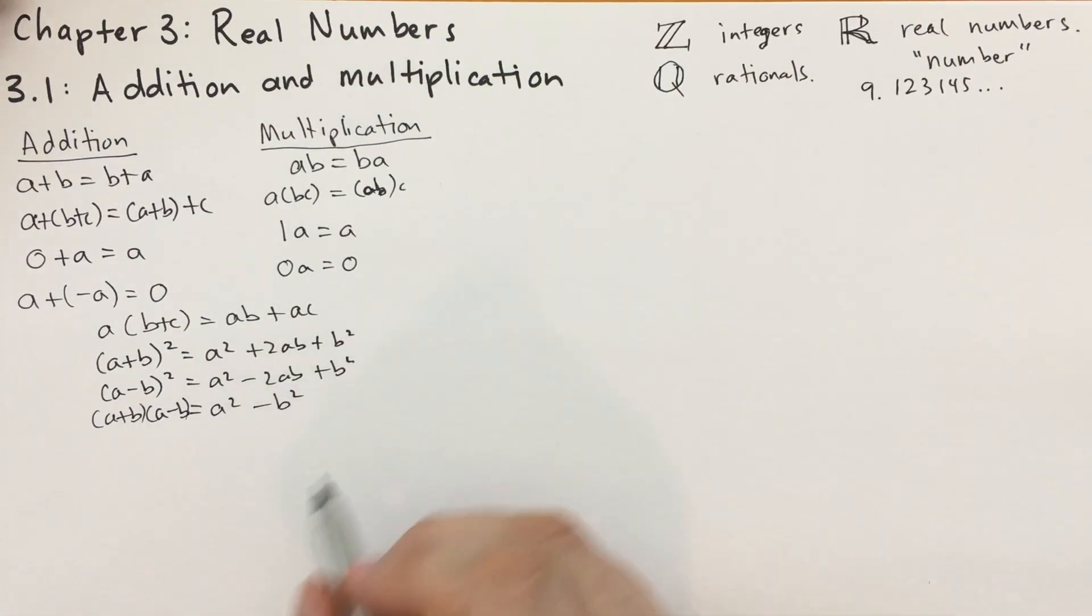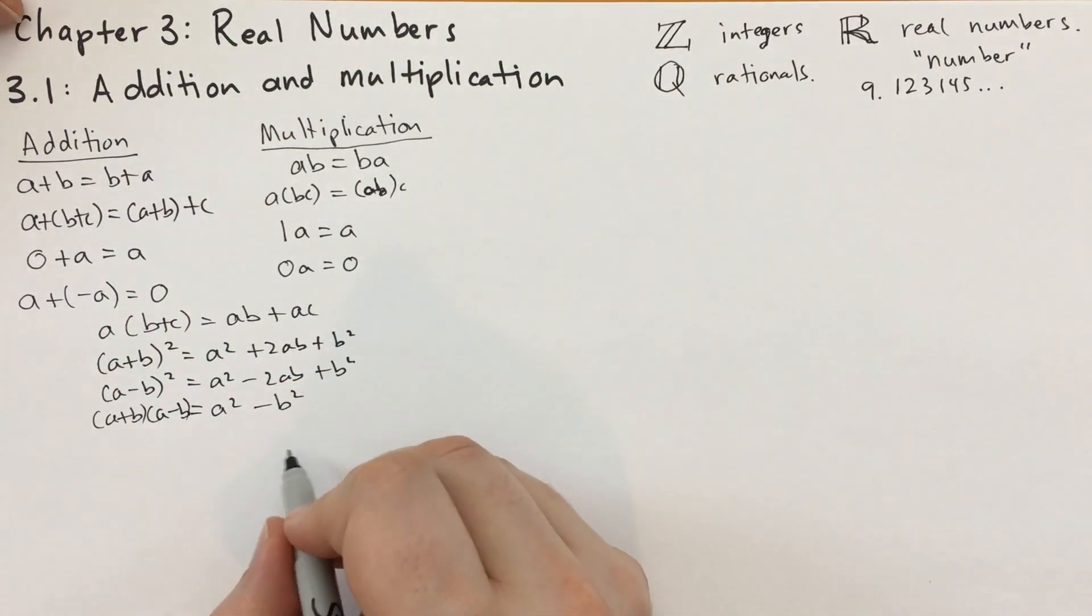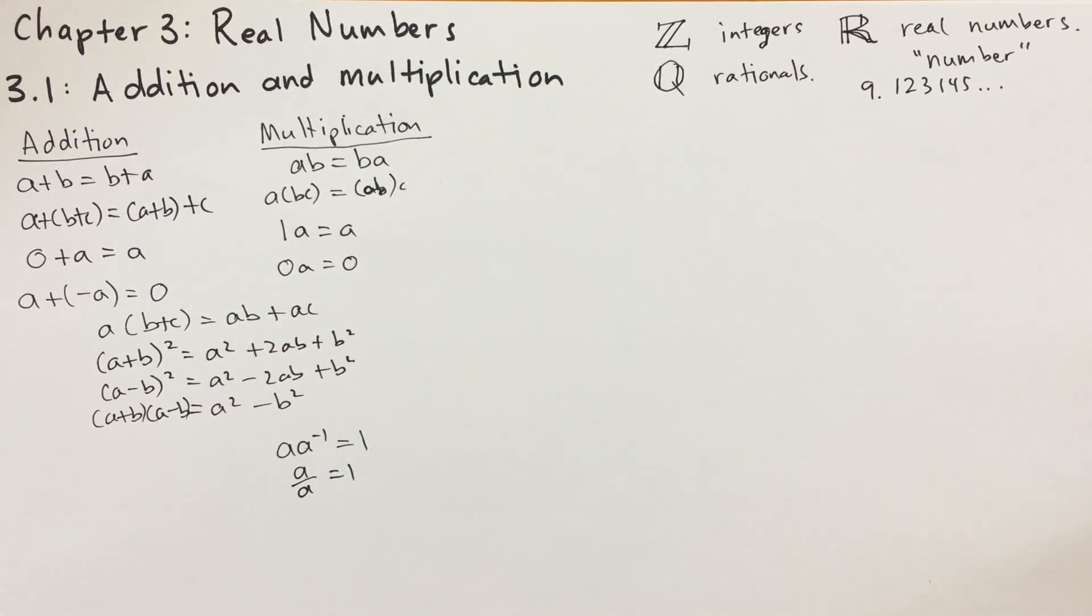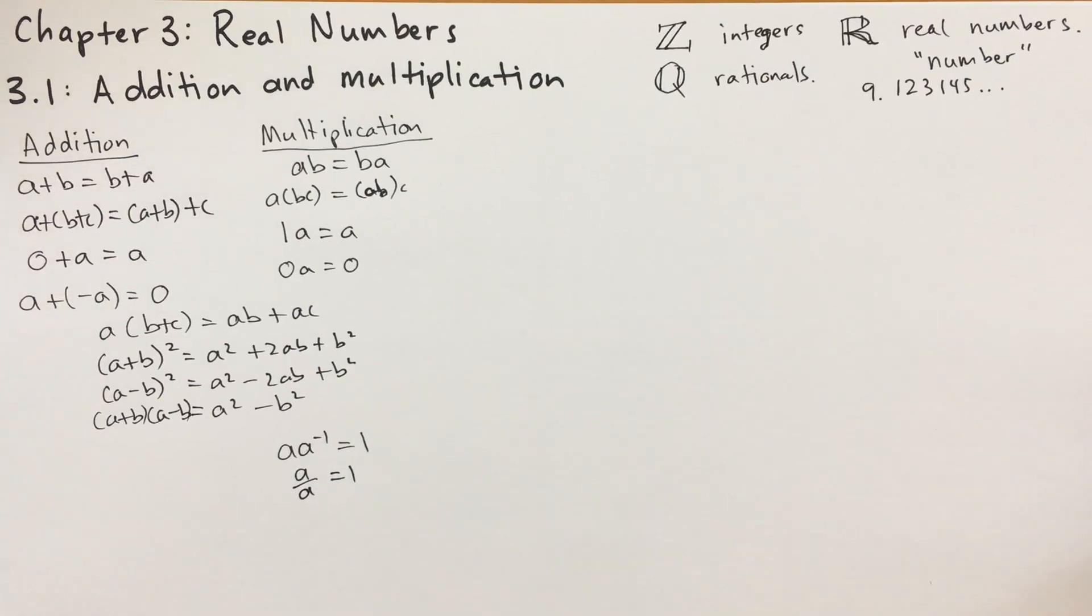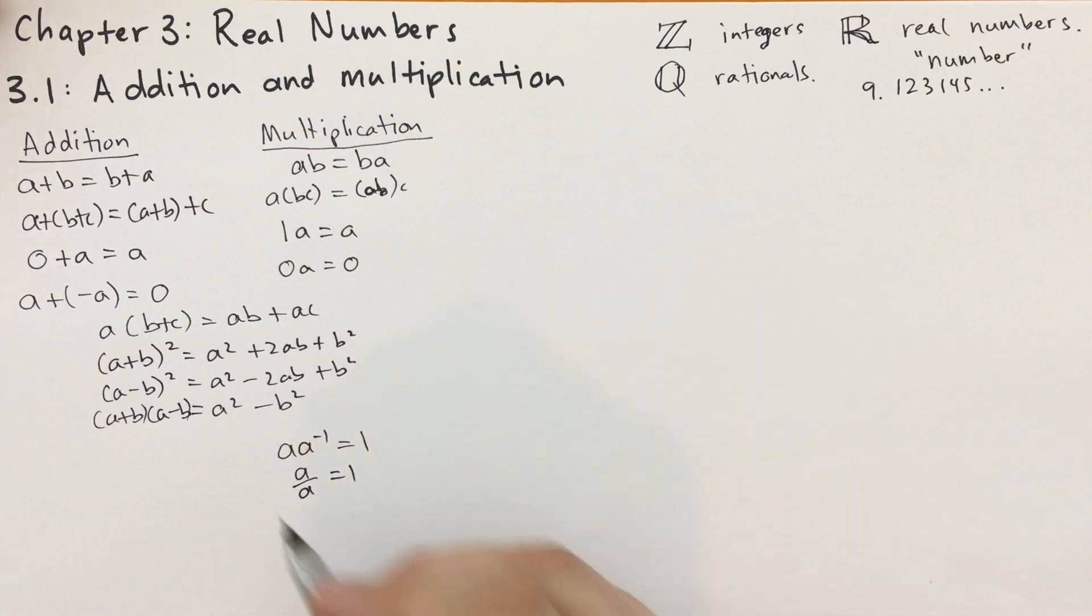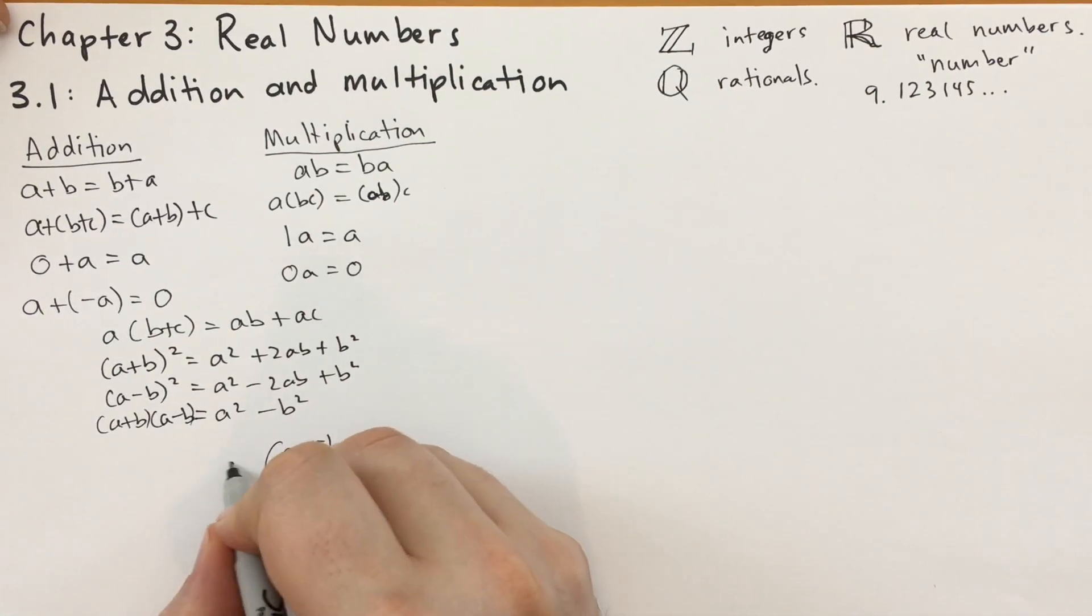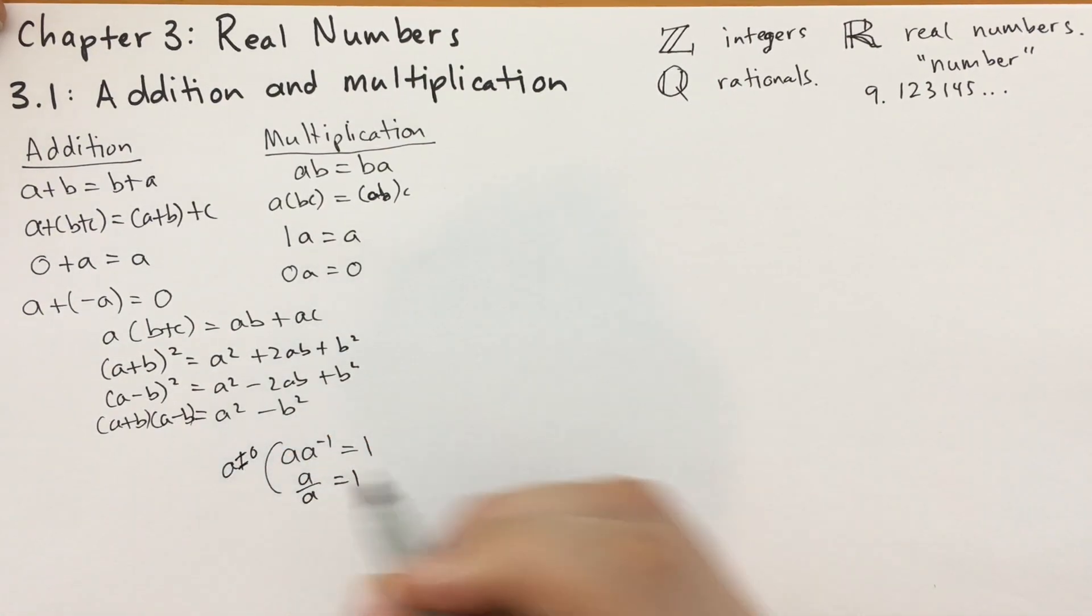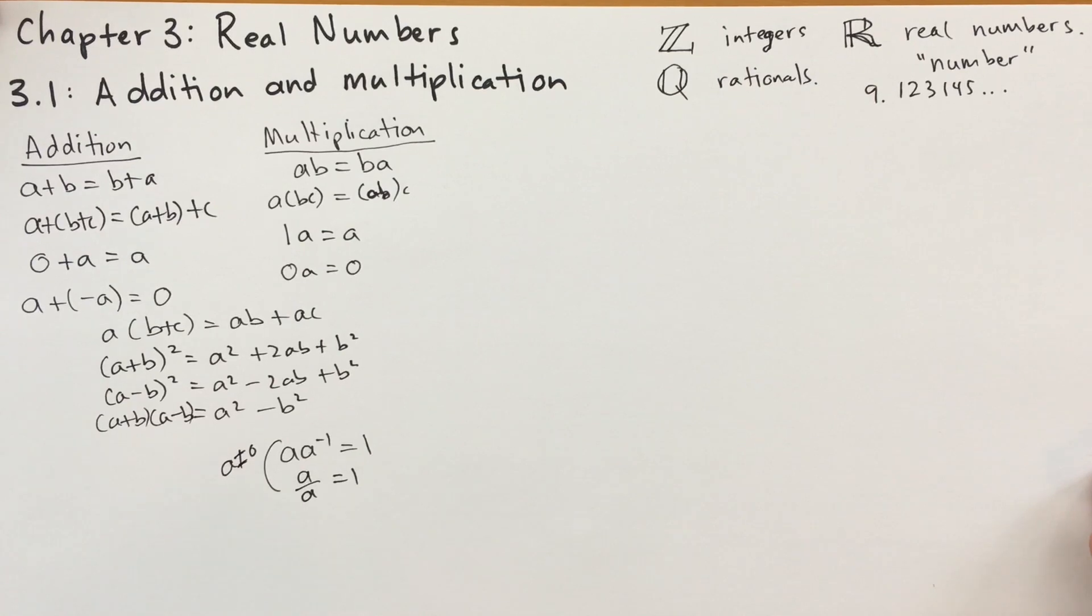We have multiplicative inverses, just like we had additive inverses, except we write them as a to the minus one. That's going to give you one. You can also write it as a over a. So the minus one means you move it downstairs. And there's a uniqueness theorem that says there's only one multiplicative inverse for each real number, except zero doesn't have one. Yeah, so for these ones, you have to know that a cannot be equal to zero. There's no multiplicative inverse for zero.